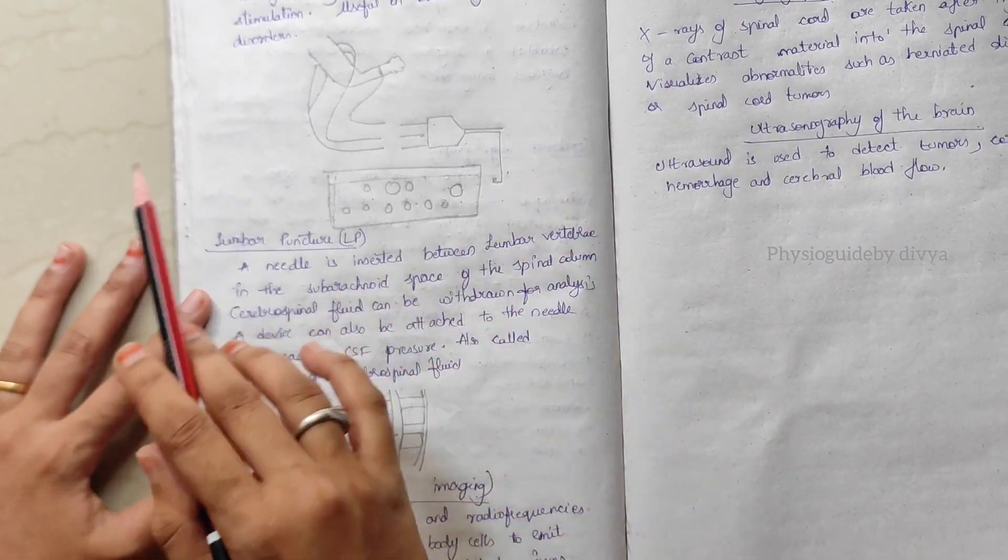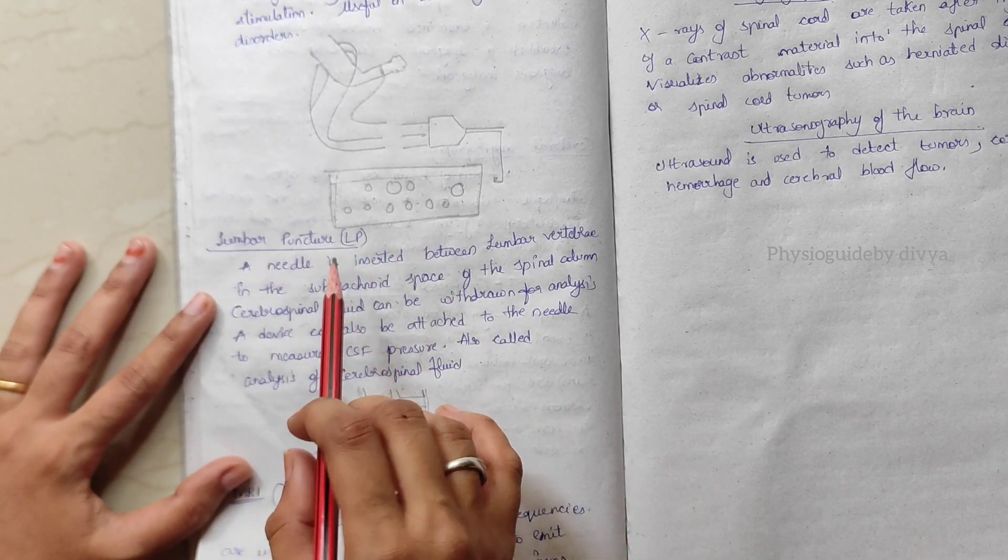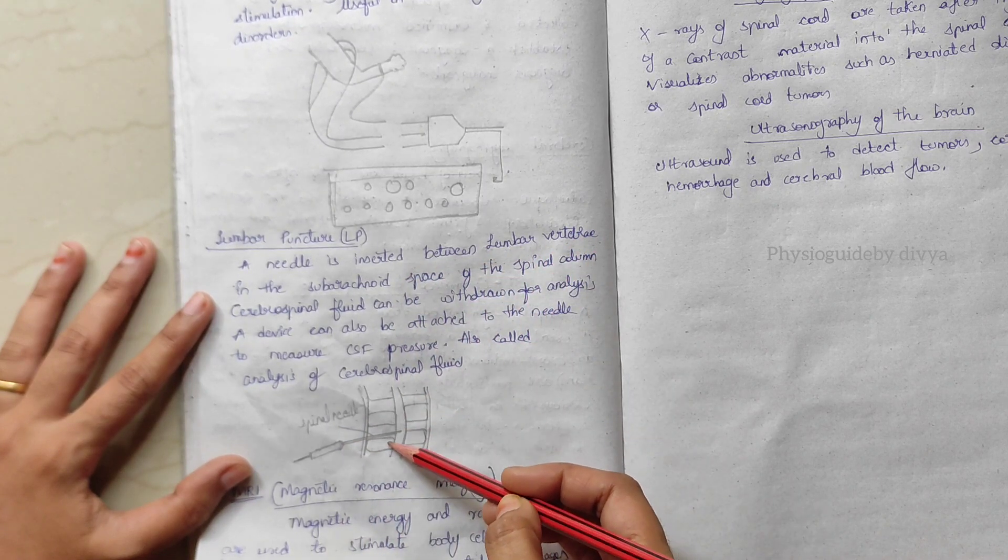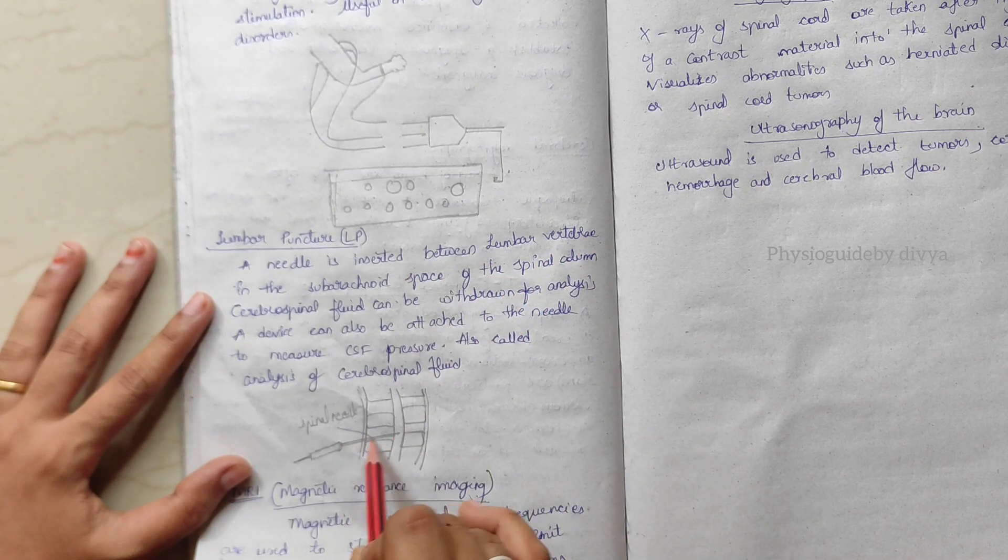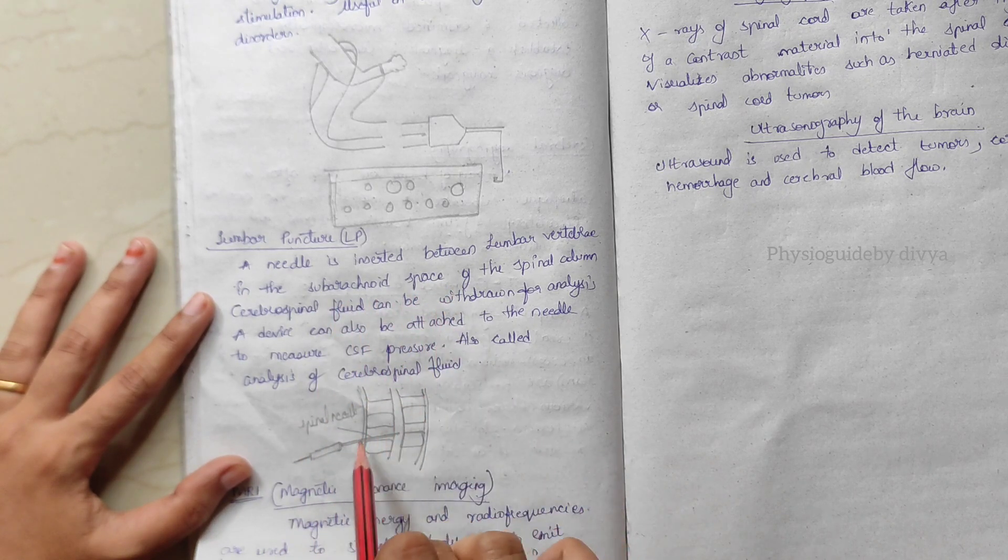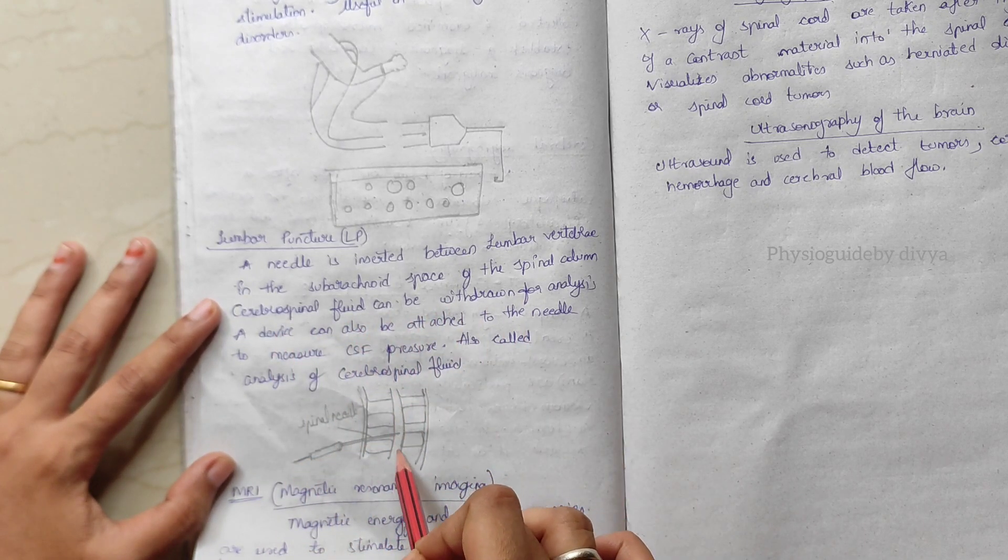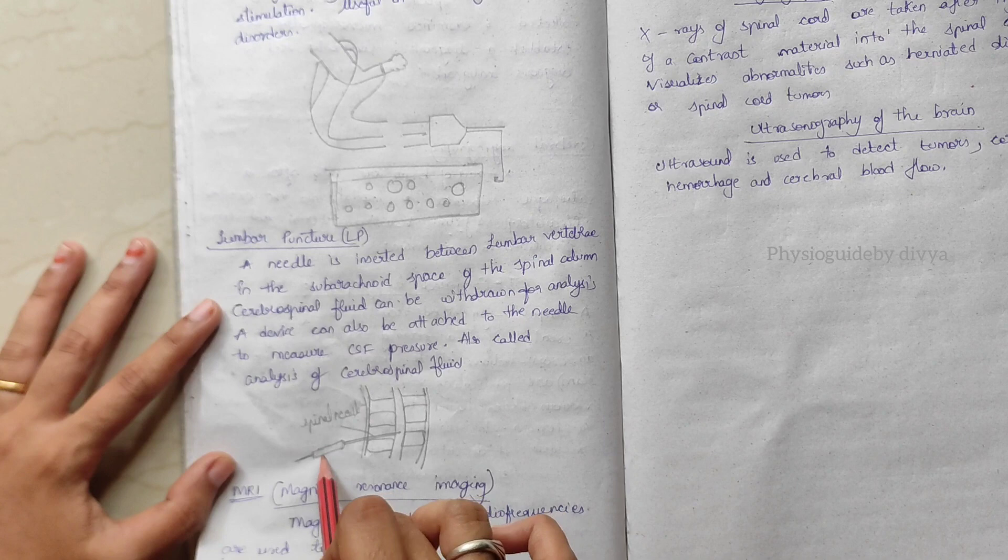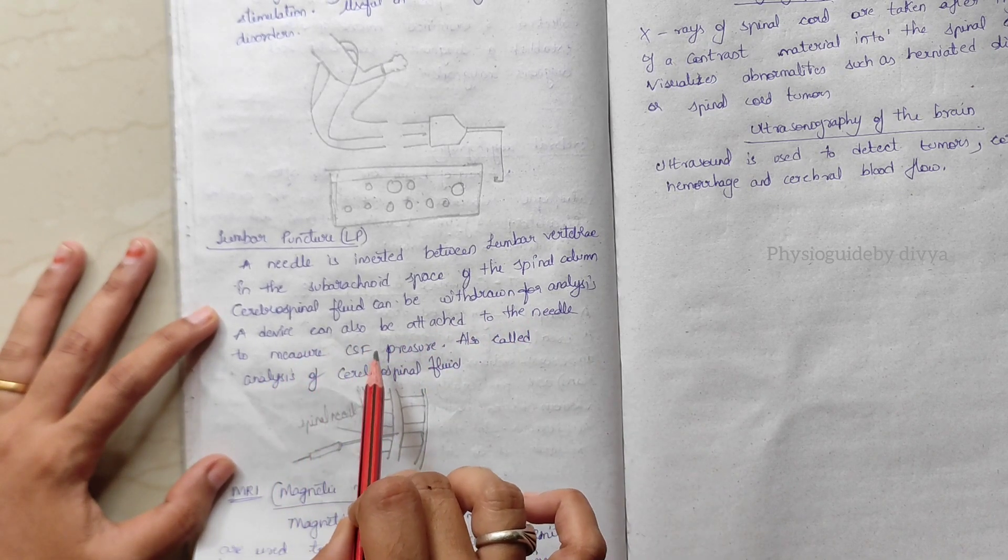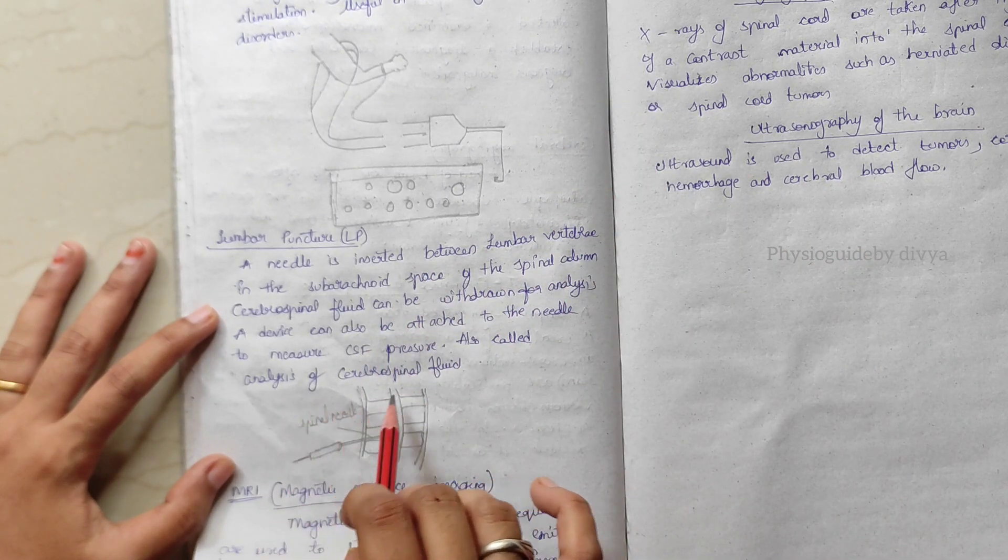Lumbar puncture. A needle is inserted between the lumbar vertebrae, see, this is one vertebra, this is one vertebra. In between, the needle is punctured in the subarachnoid space of the spinal column. Now cerebrospinal fluid can be withdrawn for analysis. A device can also be attached to the needle to measure CSF pressure. This is also called analysis of CSF, cerebrospinal fluid.